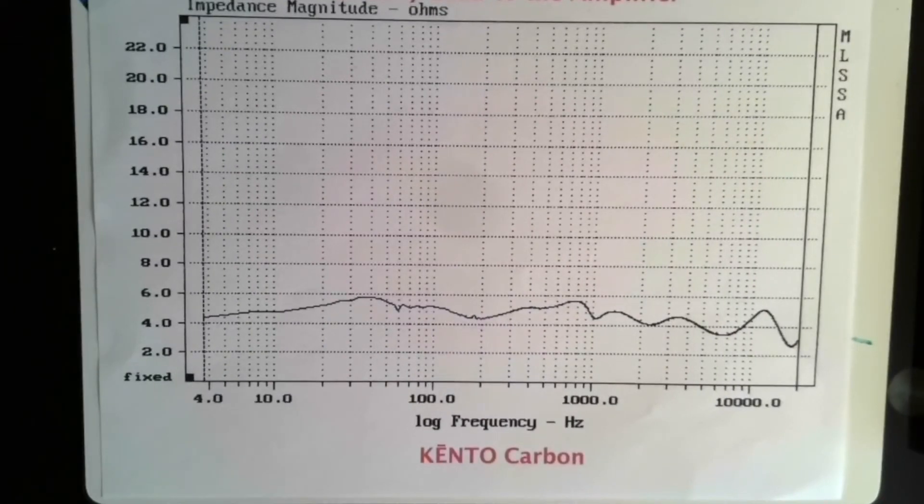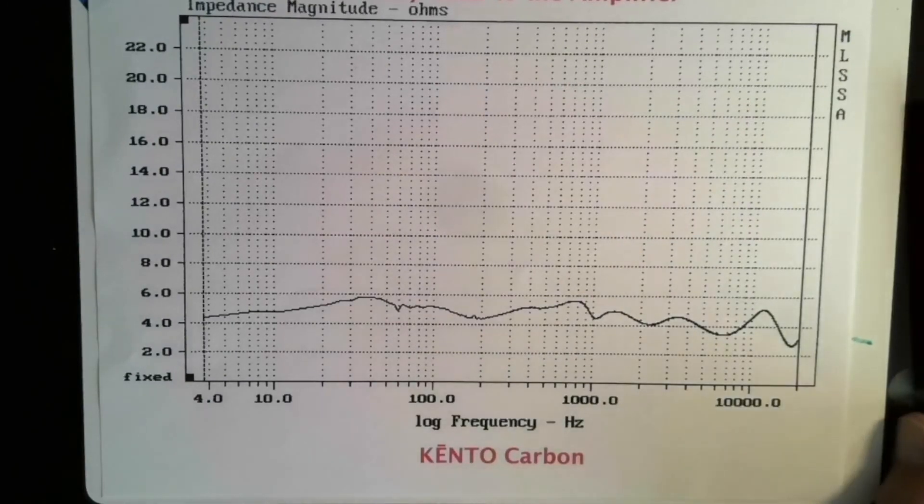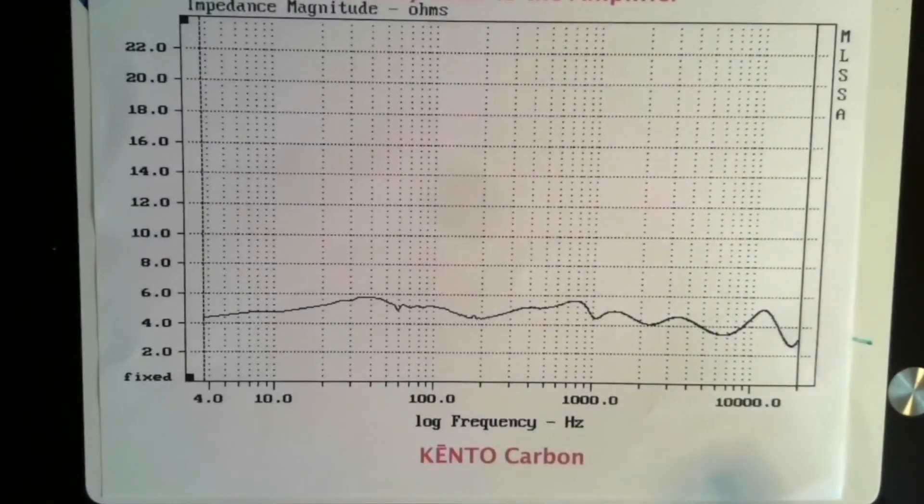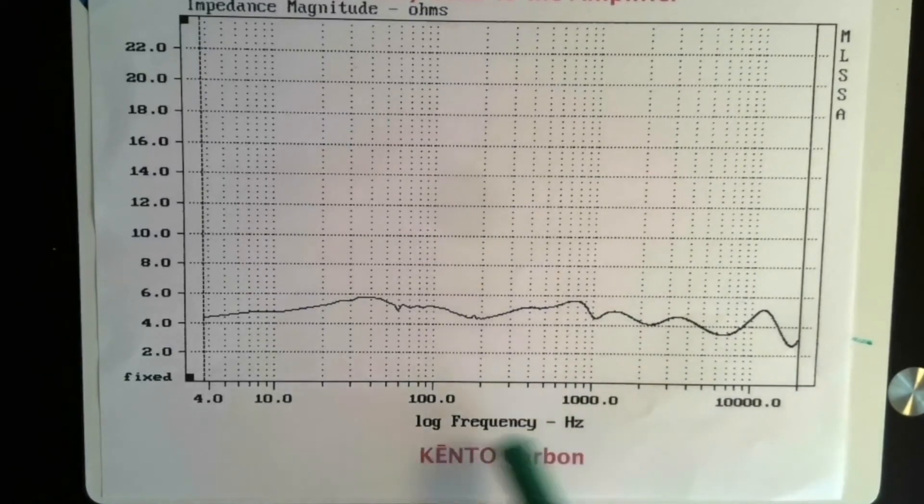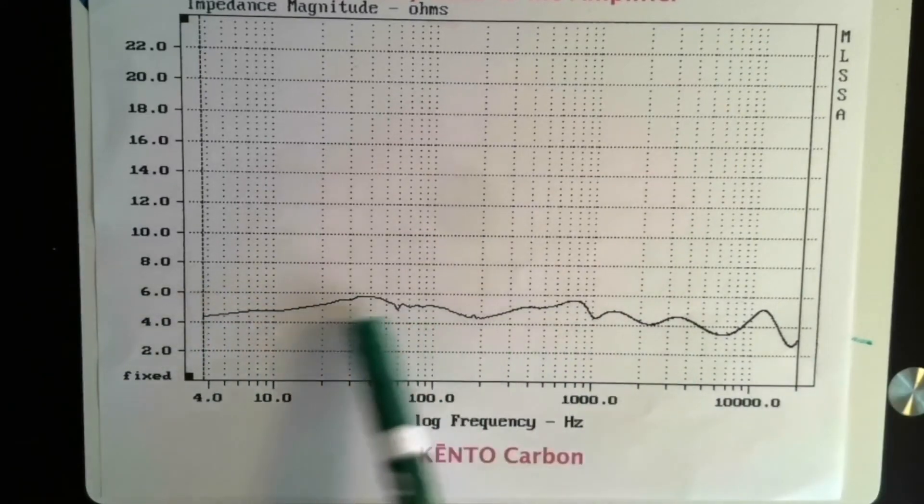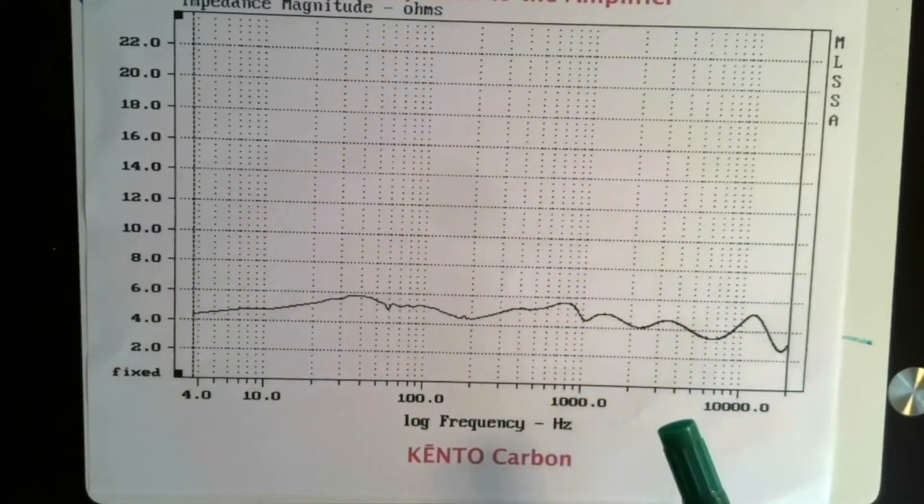Then the last thing we print is the impedance plot. Not a lot to see here, but it does give you a good idea of how difficult this speaker is going to be on an amplifier. The Kinto, as you can see, like most of our products, has a very flat impedance curve.